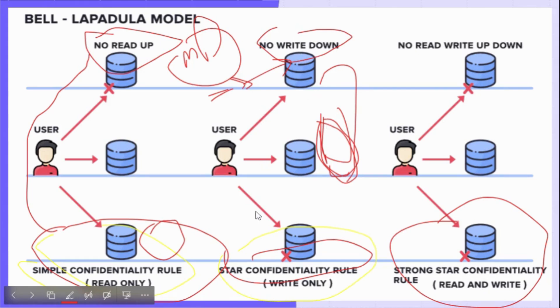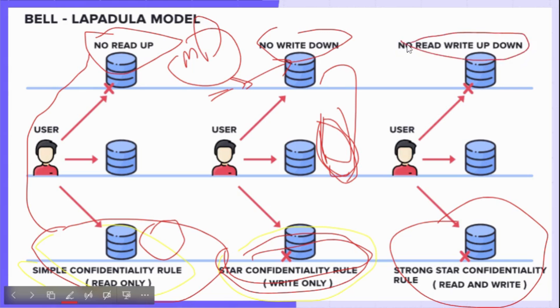To stop this kind of accidental information disclosure, the Star Property Rule is applied — no write down. Now let's look at the Strong Star Property Rule: no read or write up or down.